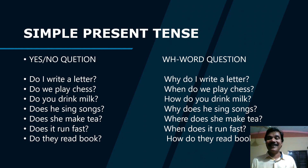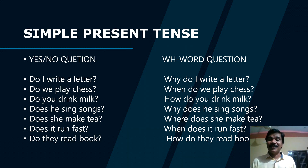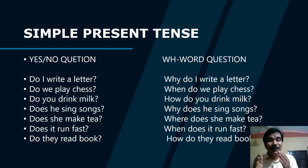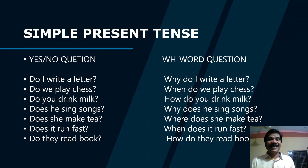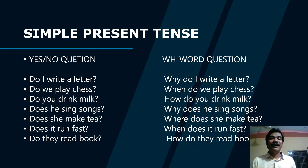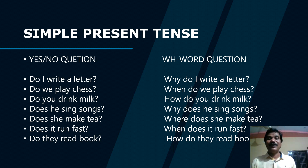'Do I write a letter?' 'Do you write a letter?' 'Why do I write a letter?' 'Do we play chess?' 'When do we play chess?' 'Do you drink milk?' 'How do you drink milk?' 'Does he sing songs?' 'Why does he sing songs?' 'Does she make tea?' 'Where does she make tea?' 'Does it run fast?' 'When does it run fast?' 'Do they read a book?' 'How do they read a book?' You can use WH-words in WH-questions and add 'do'/'does' accordingly.